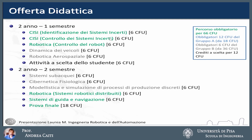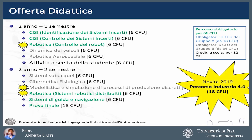In the second year, the mandatory exams are Advanced Robotics, Control and Identification of Systems, and Navigation Systems. The optional exams reflect the research activities of the teaching staff. Finally, there is a final thesis worth 18 credits. Since 2019, there is an Industry 4.0 path, made up of the mandatory Robotics exam and Modeling and Simulation of Discrete Production Processes. By choosing this option, at graduation a certificate from the department is also released confirming you have followed the Industry 4.0 path.